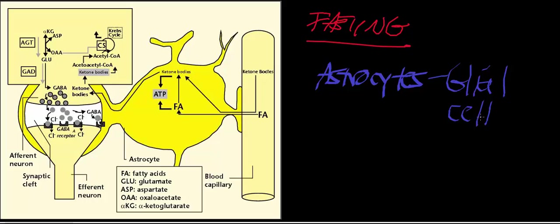What glial cells do is they perform some function that aids the neurons. Basically, you have two types of cells in the central nervous system and the peripheral. You have your neurons, which conduct action potentials and graded potentials and all that. And then you also have glial cells, which are sometimes called glia. Astrocytes are just one type of glial cell that exists in the central nervous system.